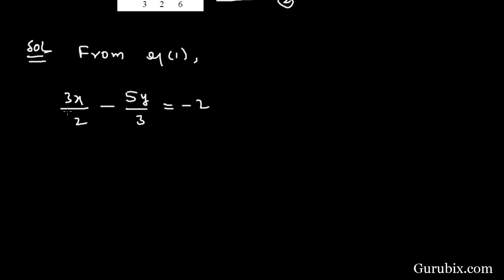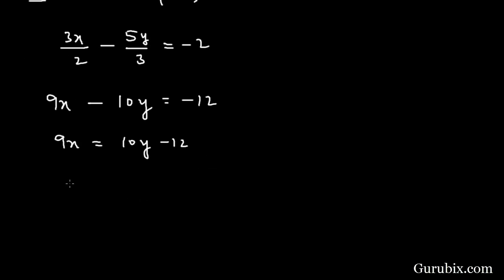We shall multiply both the sides by 6. Then here we have 9x, here we have minus 10y and here we have minus 12. This means 9x equals 10y minus 12. This means x equals 10y minus 12 over 9.